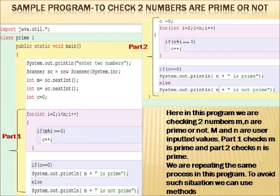Here you can see that I have written a sample program. This program checks whether two numbers are prime or not. We are getting two numbers M and N as user inputs and checking whether these two numbers are prime or not. On the page I have divided that program into two parts, part 1 and part 2. In part 1 we are checking whether the number M is prime or not, and in part 2 we are checking whether the number N is prime or not.